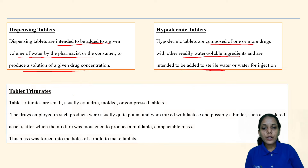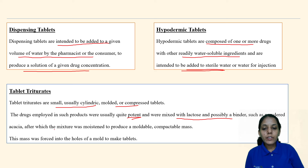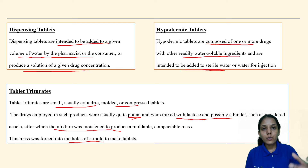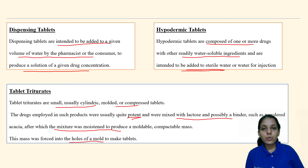Tablet triturates are small, usually cylindric molded or compressed tablets. The drugs employed are usually quite potent and were mixed with lactose or other binders such as powdered acacia, after which the mixture was moistened to produce a moldable compacted mass. This mass is then forced into the holes of molds to make the tablet.